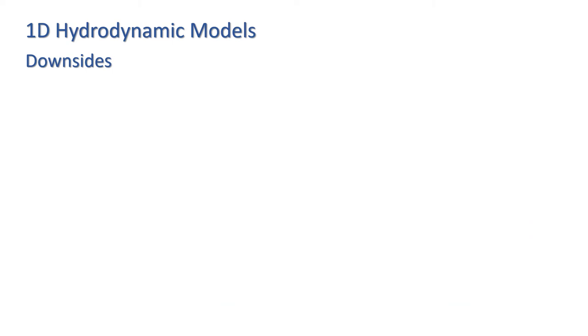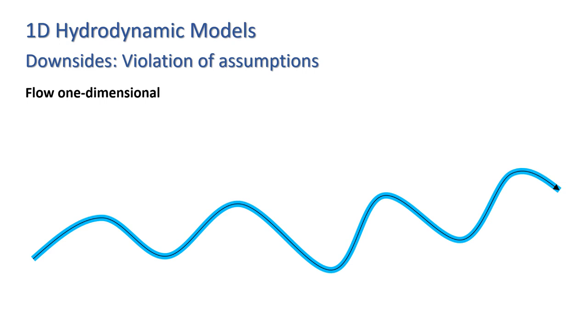Now we've seen the equations, let's think a bit more carefully about the assumptions we made and when they are violated. First, we have the 1D flow assumption. In natural channels such as rivers and streams, there's often significant meandering, which can result in poor solutions.